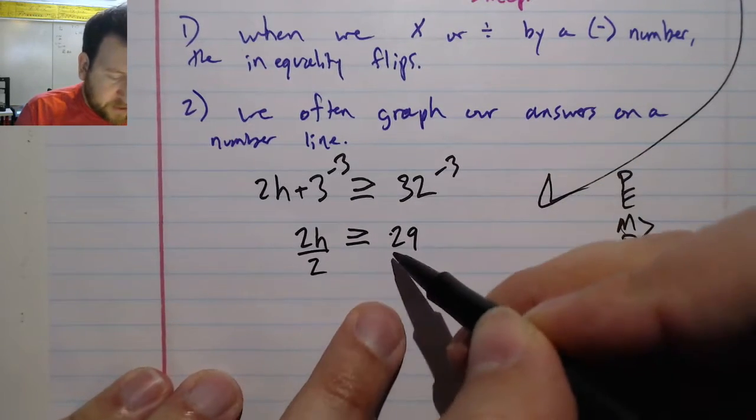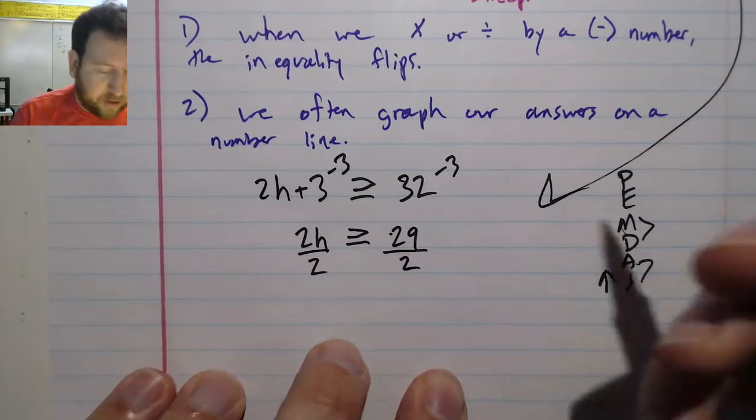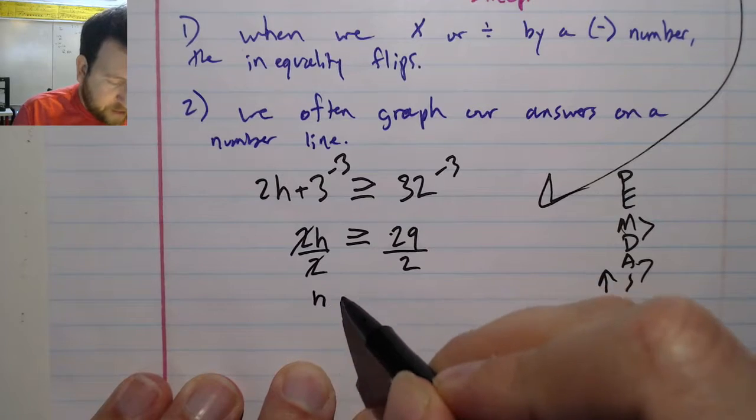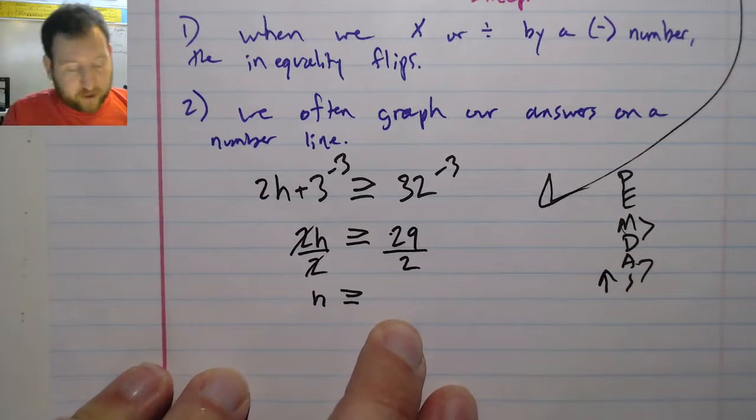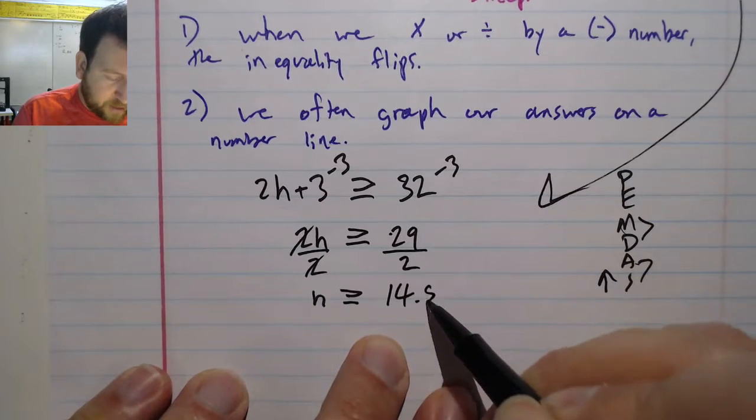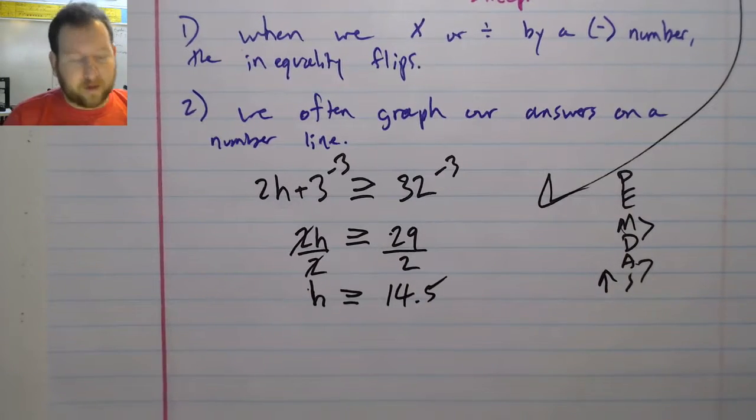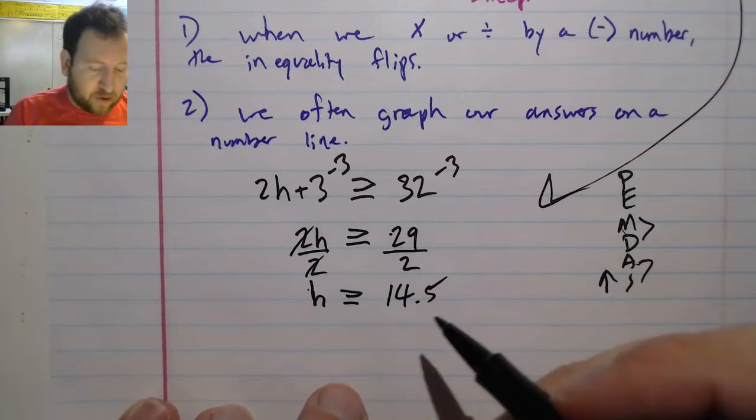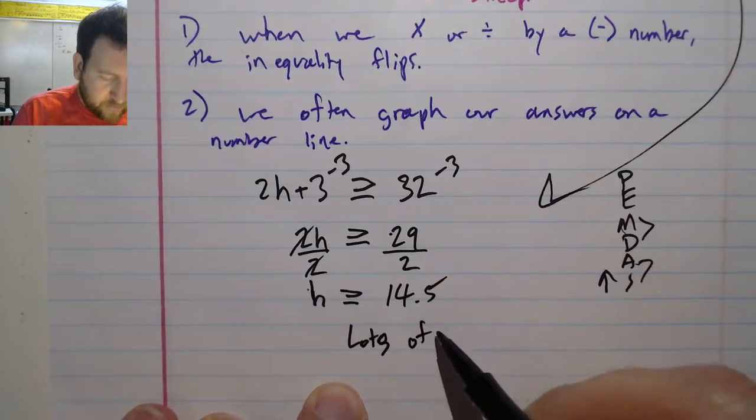I'm going to divide it by 2. I have to divide both of them by 2 because I have to keep it equal, and my twos cancel off. So I have h is greater than or equal to 29 divided by 2, which should be 14 and a half or 14.5. So my minimum hours I need to spend are 14.5. That's a lot of dragonfly hunting.